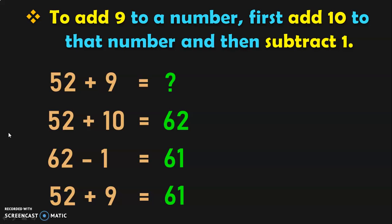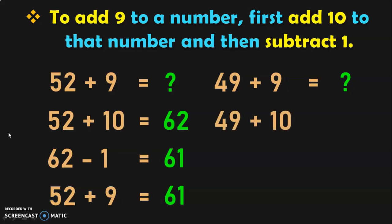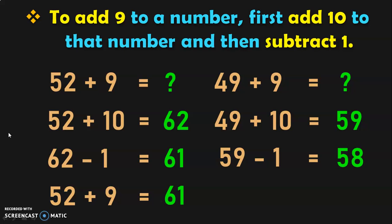See how quickly we have done this. Let us do another example for the same concept. 49 plus 9: first add 49 plus 10, which is 59. Subtract 1 from 59. 59 minus 1 is equal to 58. So, the answer for 49 plus 9 is 58.